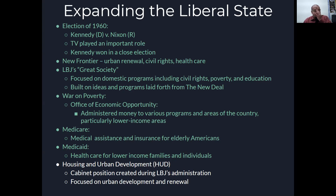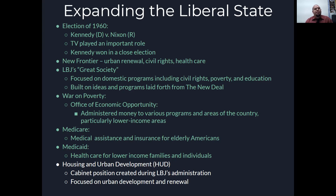Following Kennedy is Lyndon B. Johnson's Great Society. He focused on domestic programs including civil rights, poverty, and education — basically the New Deal plus civil rights. He also declared a war on poverty in America and created the Office of Economic Opportunity, which would administer money to various programs in areas of the country, particularly low-income areas.